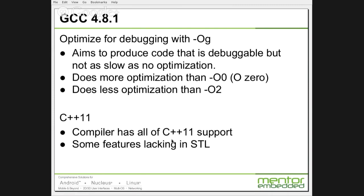Another change in the compiler is C++11 support. C++11 was released in 2011 and work has been done on the C++ compiler to support that. The compiler now has support for all the C++11 language features. However, the standard template library — libstdc++ — doesn't have all of the support yet; there are some features that are lacking. For most users of C++11, I believe the useful set is there. The compiler doesn't default to C++11 — you need to set the option to accept C++11; it defaults to C++03.